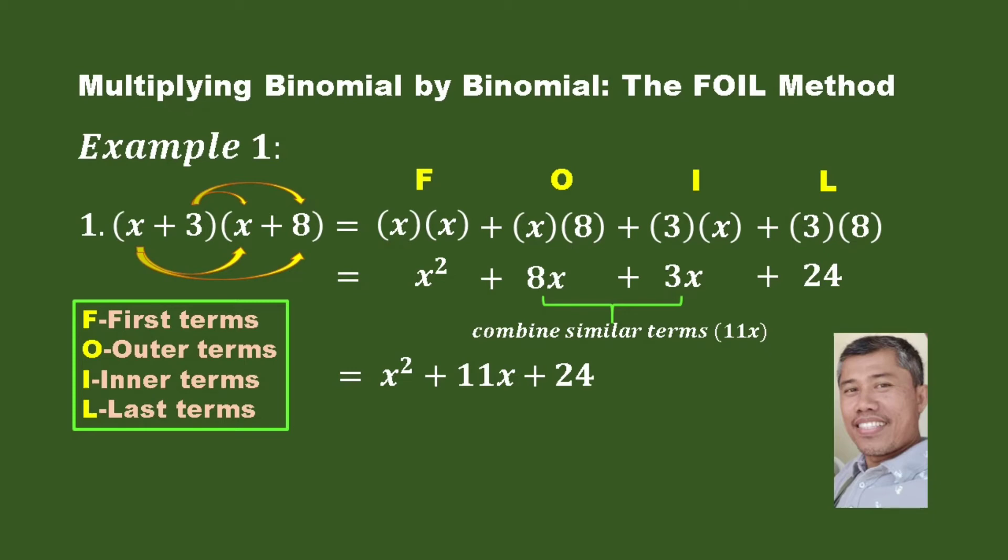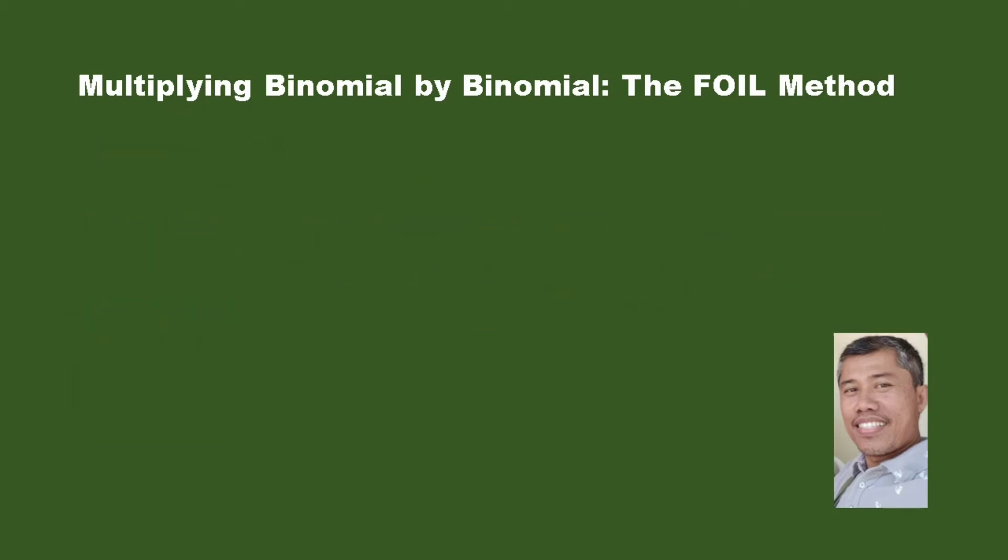I'll move to the next example. Dealing with positive and negative sign of the numbers. We have x negative 3 quantity times x positive 8 quantity.